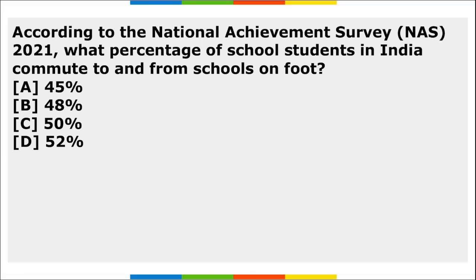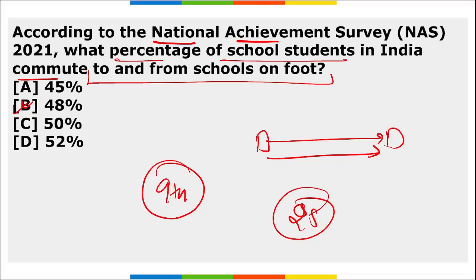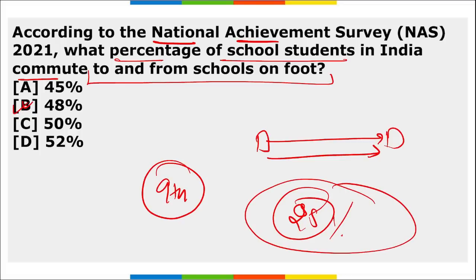According to the National Achievement Survey 2021, around 48% of school students across India commute to and from school on foot, while 9% use school transportation. The survey also found that at least 25% of schools face a lack of parental support in students' learning.